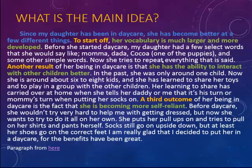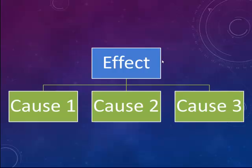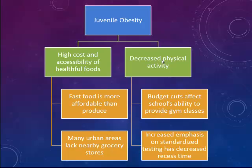The other type of organization in cause and effect is one single effect and its many causes. Using the same topic — juvenile obesity — instead of being the cause, it is now the effect. We can identify the causes: one cause might be the high cost and limited accessibility of healthful foods, and another is decreased physical activity. Supporting details include that fast food is more affordable than produce, many urban areas lack nearby grocery stores, budget cuts affect schools' ability to provide gym classes, and increased emphasis on standardized testing has decreased recess time.